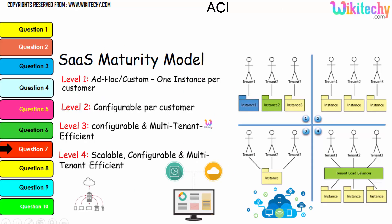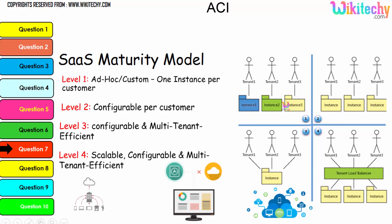You are able to see level one here — one instance per customer — and level two, which is configurable per customer. You can see the different colors representing different instances. Level three is configurable with multi-tenant architecture, with a load balancer — scalable, configurable, and multi-tenant. This is your cloud computing network environment.